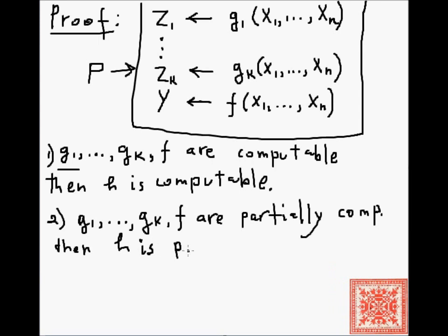Not politically correct, but partially computable. In either case, psi of p of n is equal to h of x1 through xn.